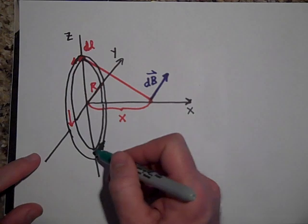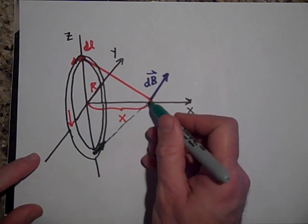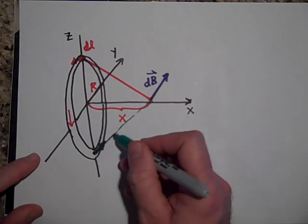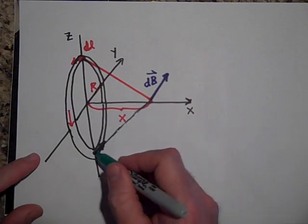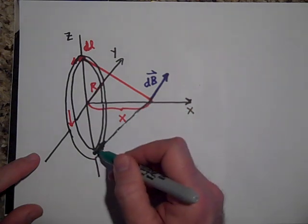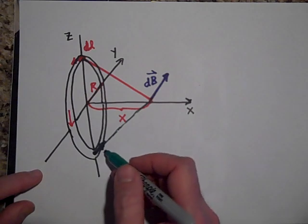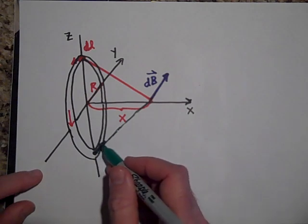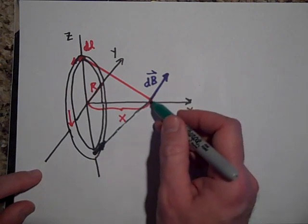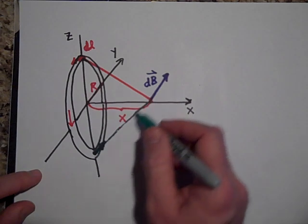then right here if I were to draw the vector from here to there. Now those look like they're in the same direction, but the DL there is actually perpendicular to this vector.